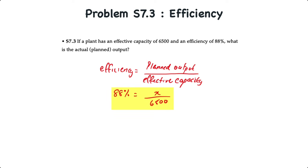So we're going to use a little bit of algebra here and we're going to make 88% equal to plant output or x over 6,500. x therefore is equal to 88% times 6,500 units, which is equal to 5,720 units.